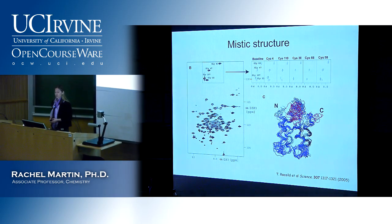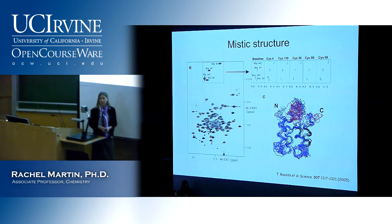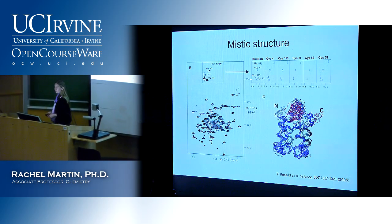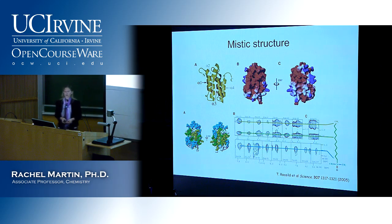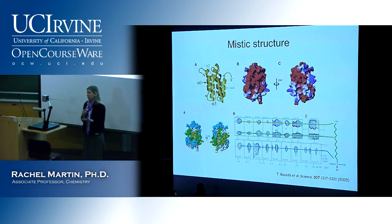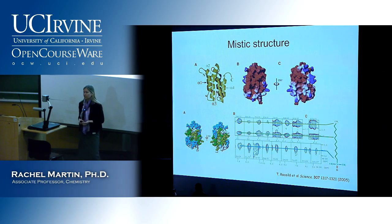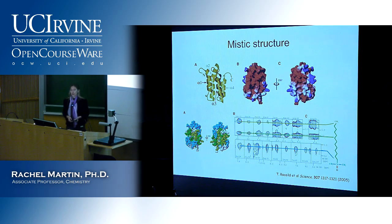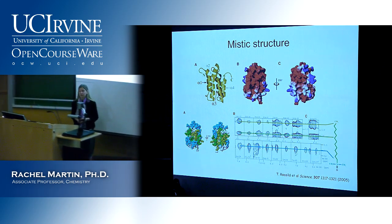An example structure solved using these techniques is mystic, a membrane protein that helps other membrane proteins fold up, solved by Roland Riek's group. These inter-nuclear correlations can be observed not only within a molecule but also across interfaces between two molecules — for instance, between the protein and specific parts of the membrane — allowing researchers to learn how the protein sits in the membrane from the NMR structure.